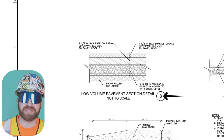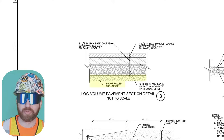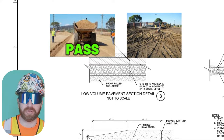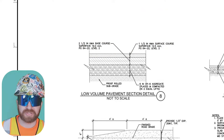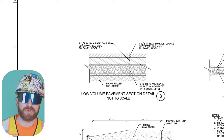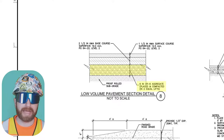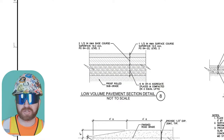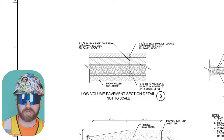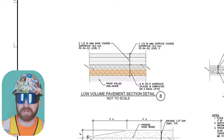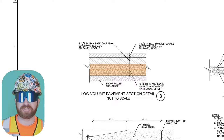Let's zoom in on detail eight on C0.2: the low volume pavement section detail. The bottom states 'proof rolled subgrade.' A proof roll is when you take a construction vehicle of a certain weight and roll it over an area to ensure it won't sink or create tire rutting — you want high-density compacted earth to provide strength and longevity to everything built above it. The note next to this states 'six inch CR6 aggregate placed and compacted in two equal lifts.' Two lifts means you can't just put material down all at once and compact the top — you build it up in layers to ensure each layer gets adequate compaction to safely support the layer above it.